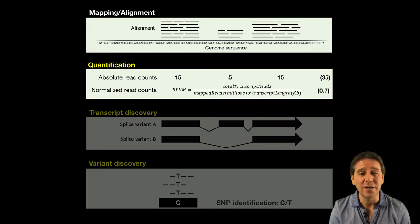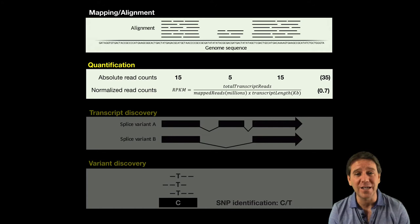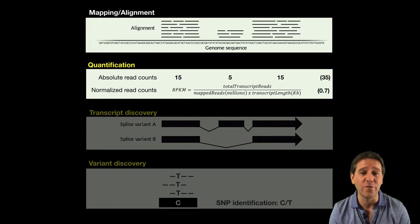Here we have our alignment output at the top, and with quantification we can begin to simply count up the number of reads at a given region. For example, the first and third exons have 15 reads each mapped to them, and the second exon has only five reads, giving us a sum for the whole gene region of 35.